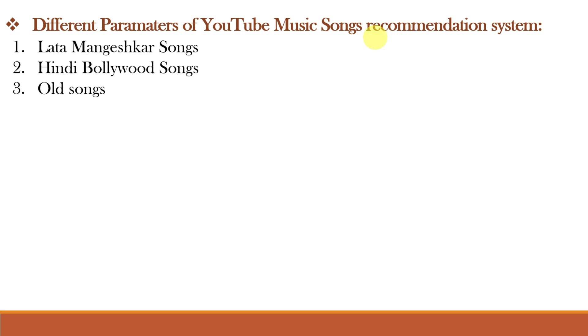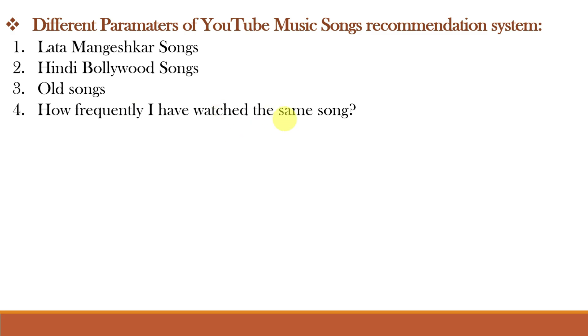Let us understand with one more interesting example: a songs recommendation system. Artificial Intelligence suggests songs by learning what we like and what we listen to, then gives recommendations based on that. For example, if I open YouTube Music, it considers many parameters. From my past history, YouTube knows I like Lata Mangeshkar songs — Hindi Bollywood old songs — and from a large database it recommends such songs. It also considers how frequently I have watched a particular song, so frequency of watch is another parameter.